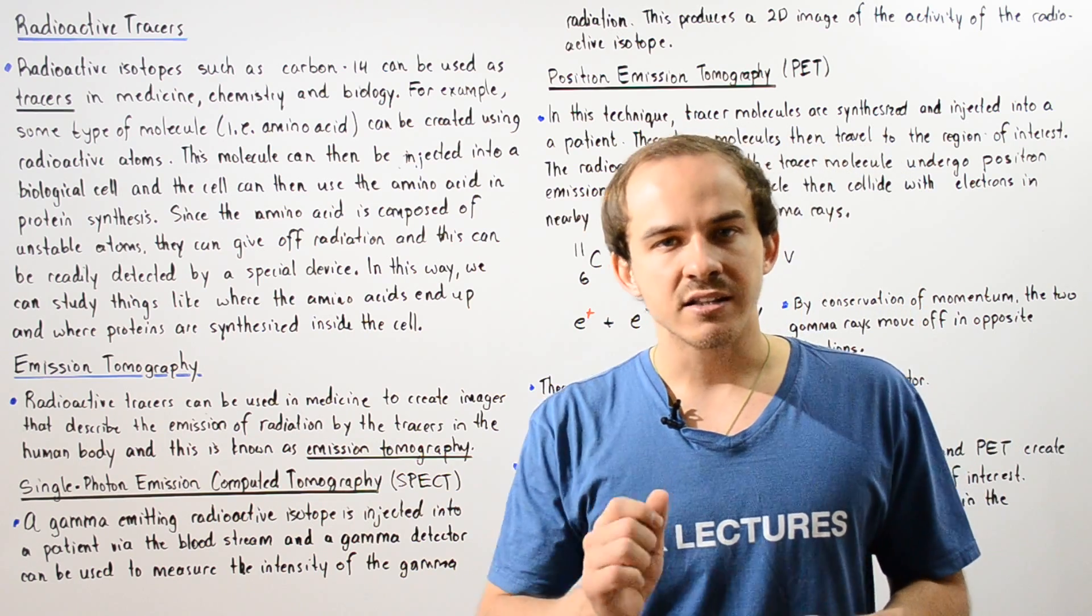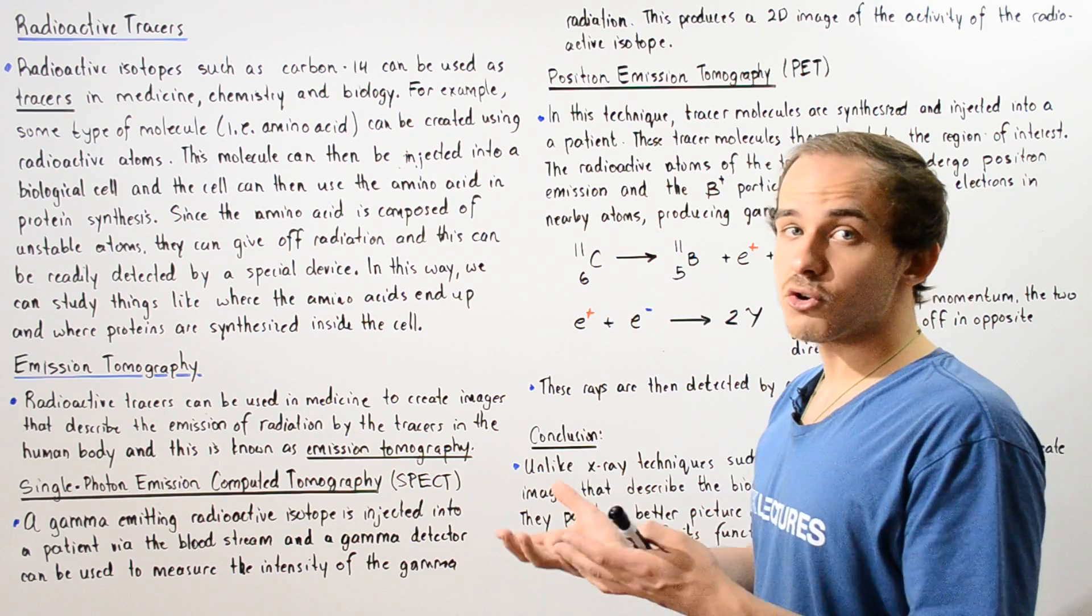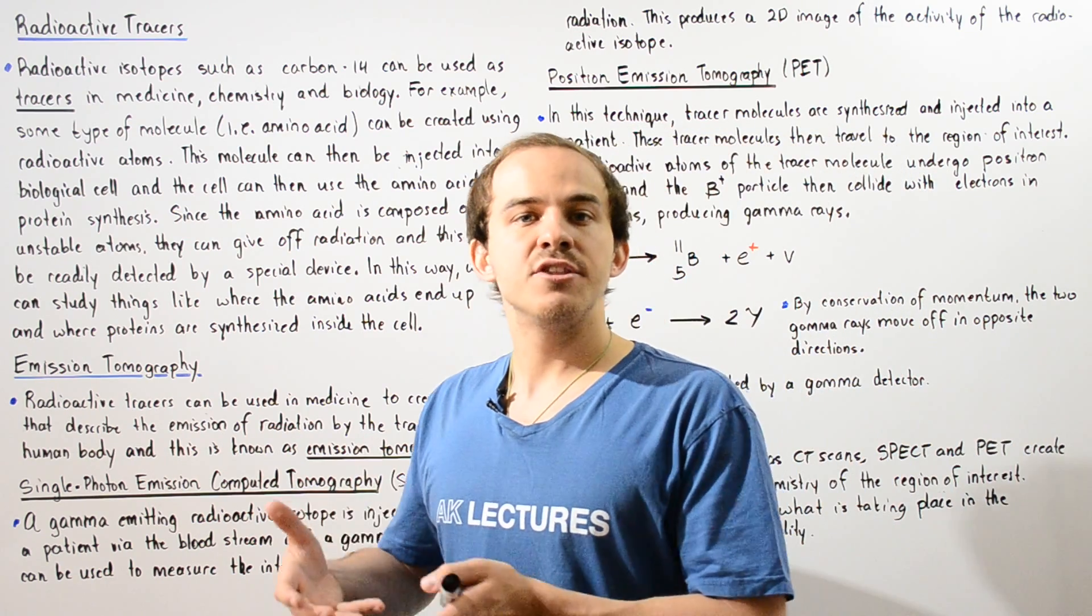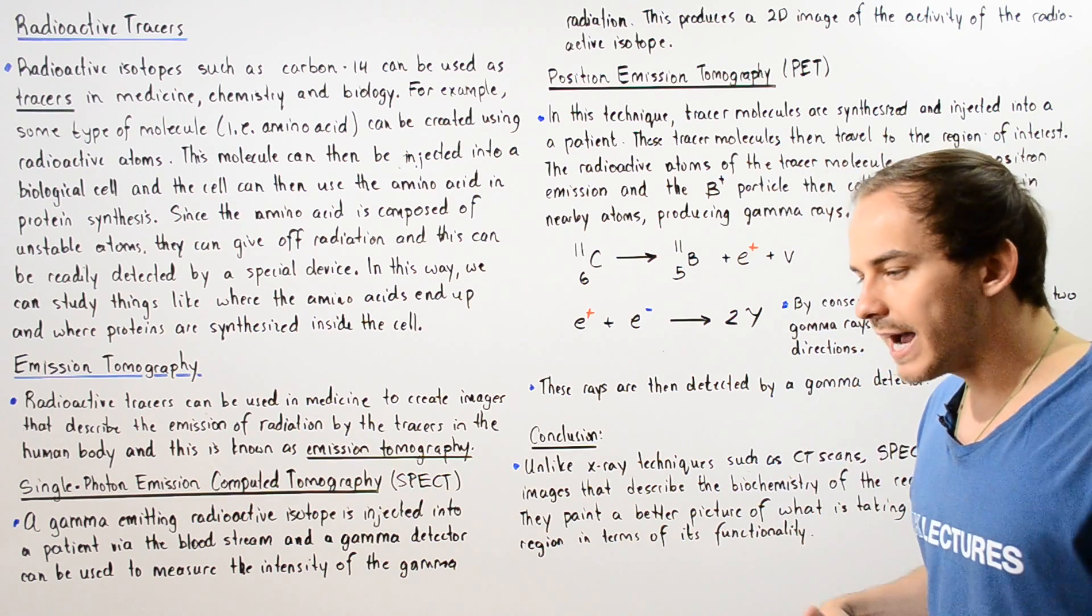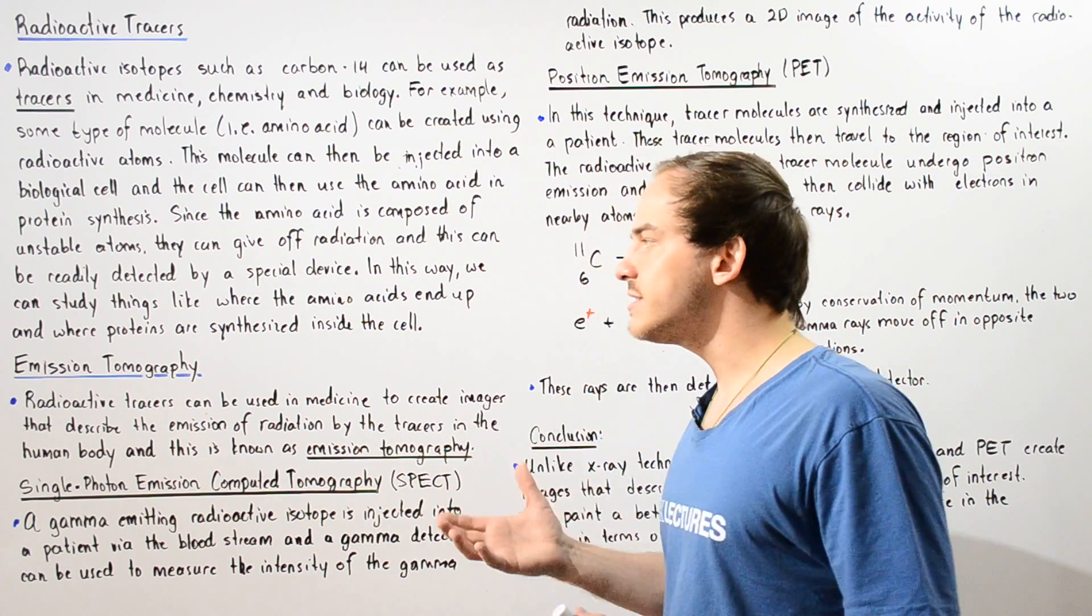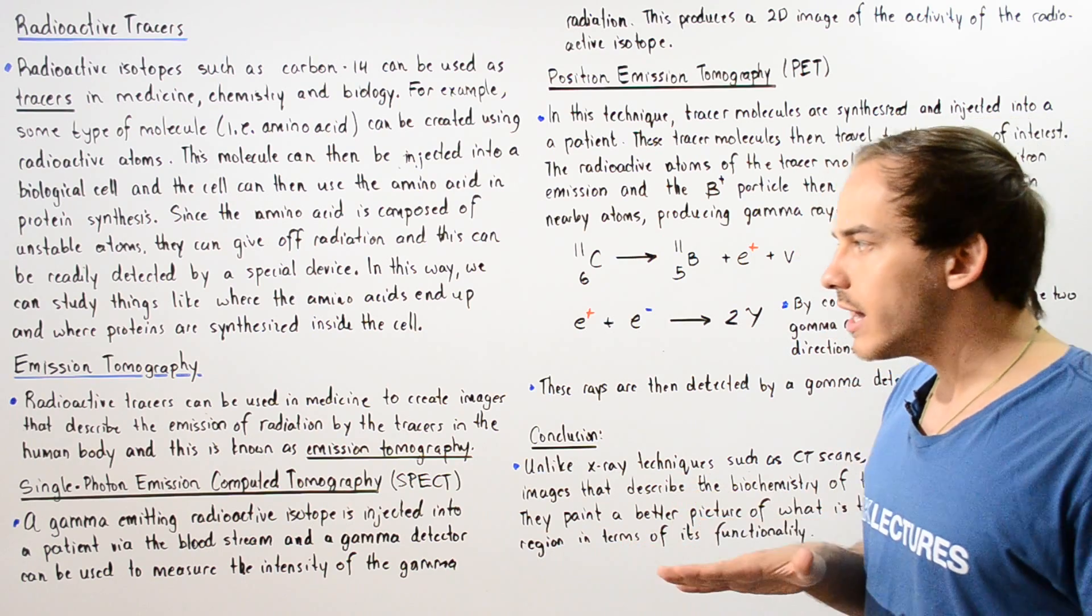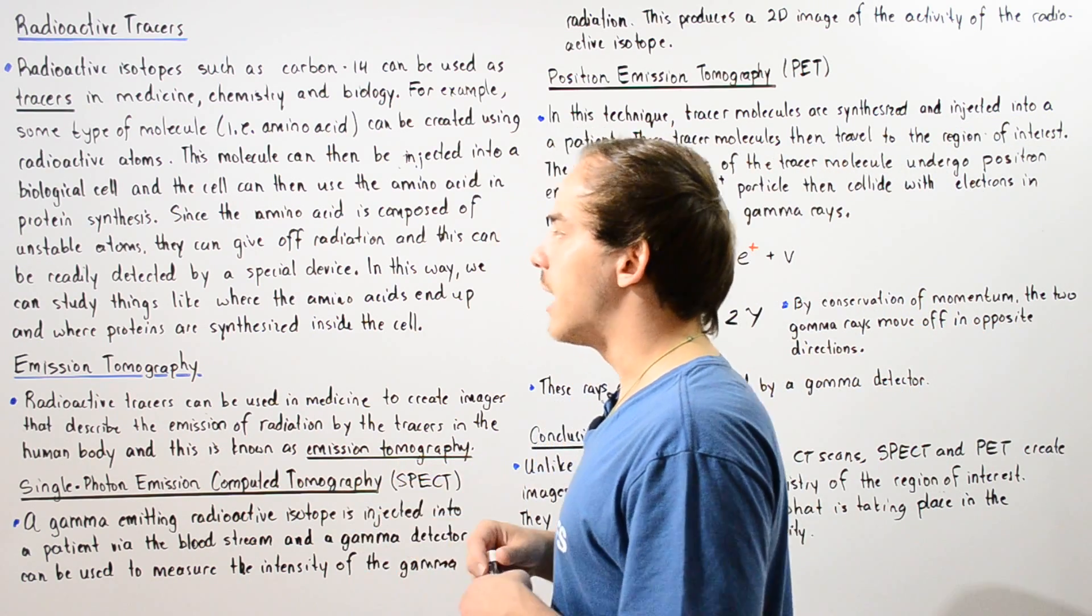This is exactly how we know that proteins are synthesized inside the ribosomes and then sent off into the Golgi apparatus where they are modified and then sent off to different regions, for example, the cell membrane.